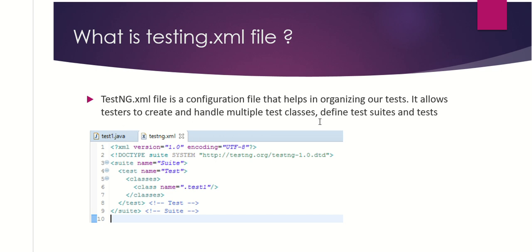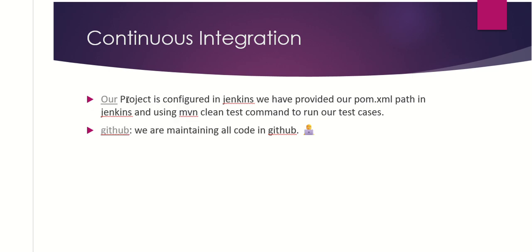It's worth memorizing how the testng.xml file looks, as the interviewer may ask you to write a sample testng.xml on a notepad. The testng.xml file is a configuration file that helps organize our tests. It allows the tester to create and handle multiple test classes, define the test suite and tests. The suite tag contains one or more tests; the test tag defines a test; and classes are contained within a test. For continuous integration, our project is configured in Jenkins, with the pom.xml path provided and using the 'mvn clean test' command. For code maintenance, we use GitHub.